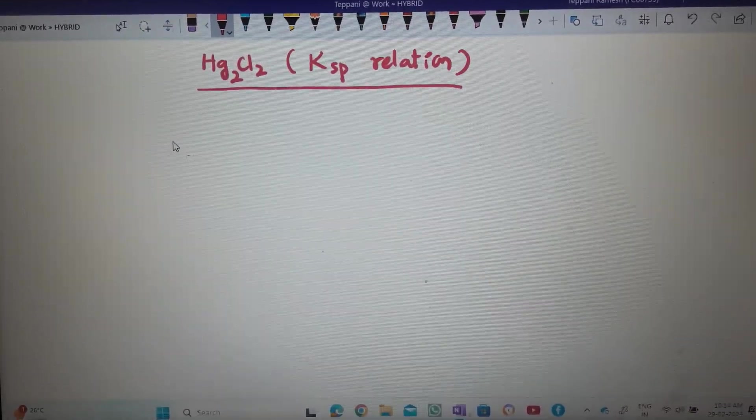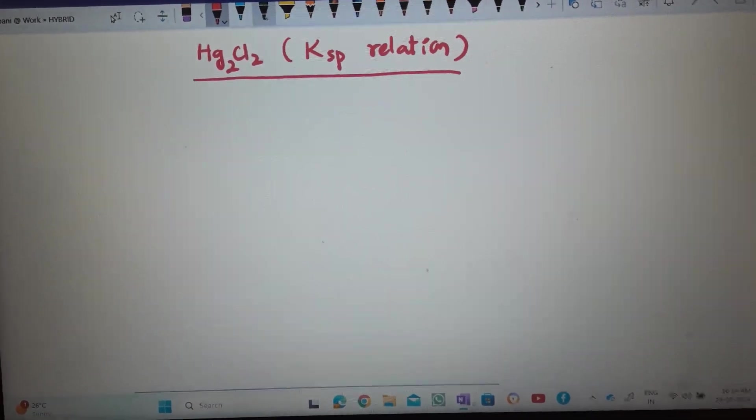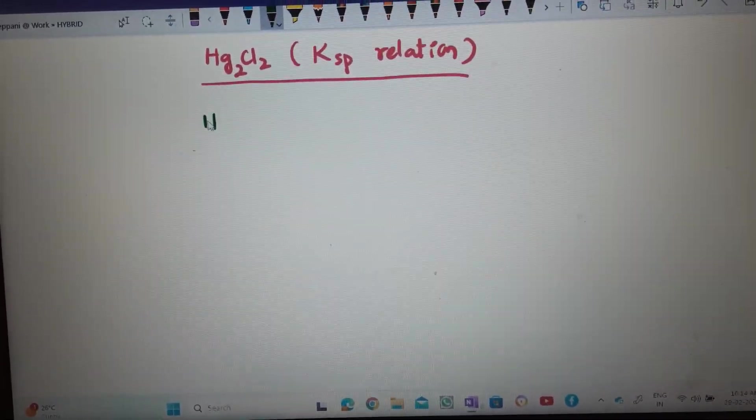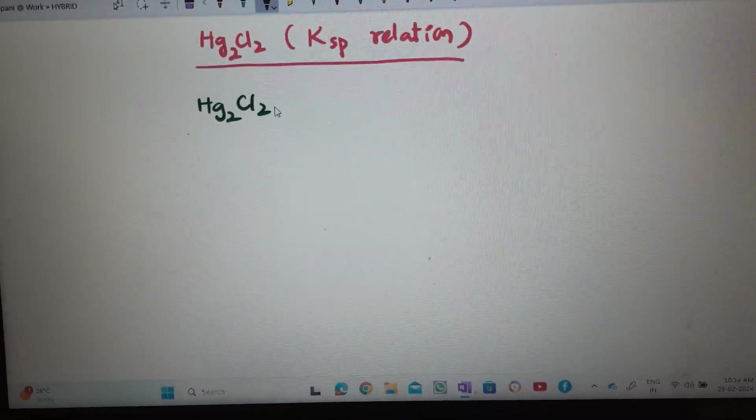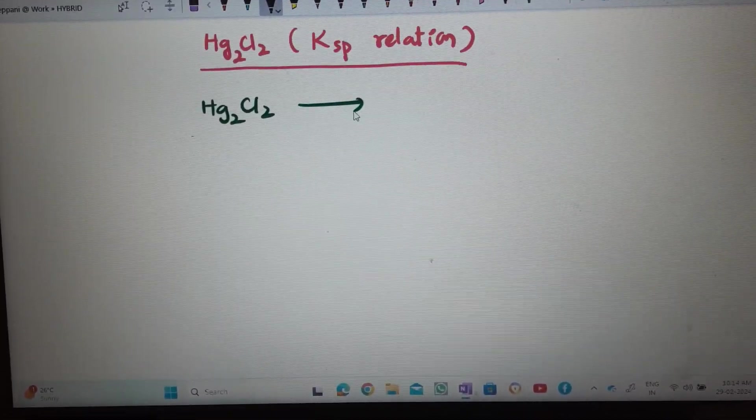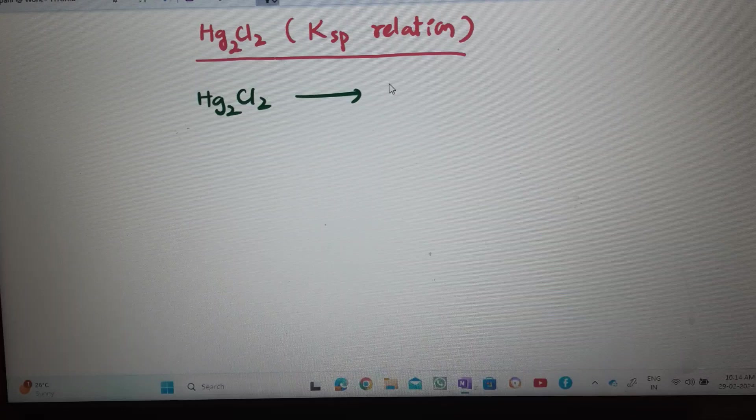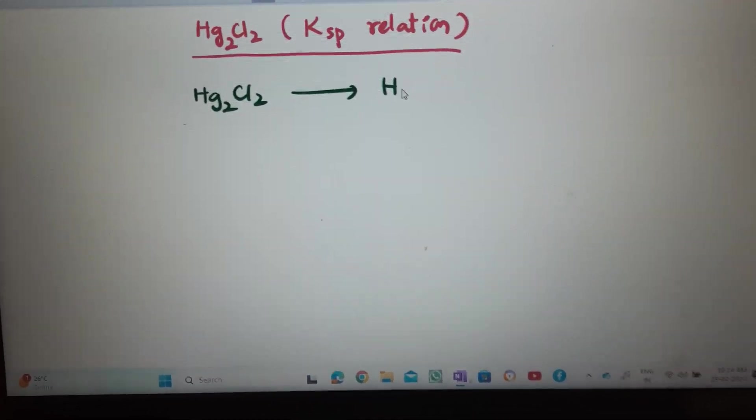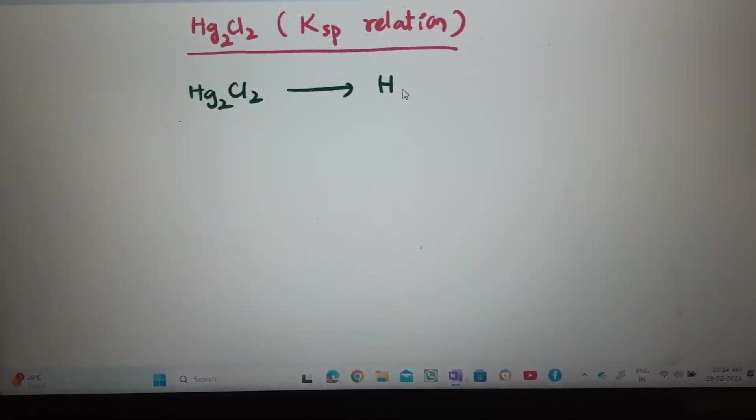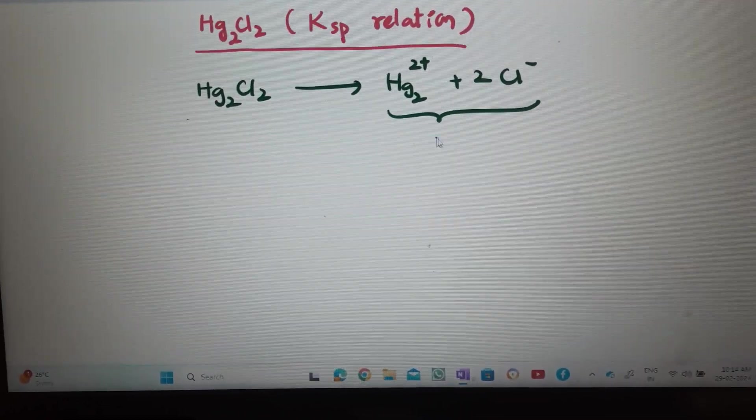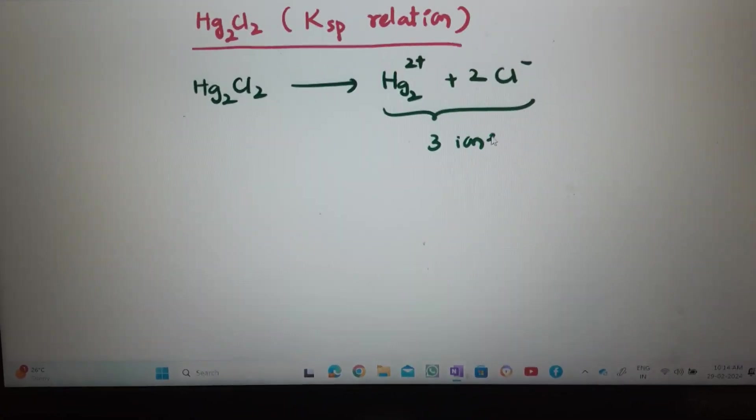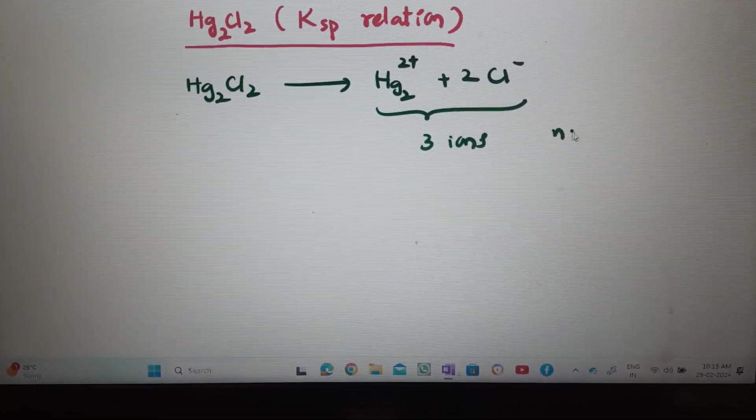Hg2Cl2 Ksp relation. So, Hg2Cl2, how it dissociates, we should know. It is giving Hg2²⁺ plus 2Cl⁻, total 3 ions, means N value 3.